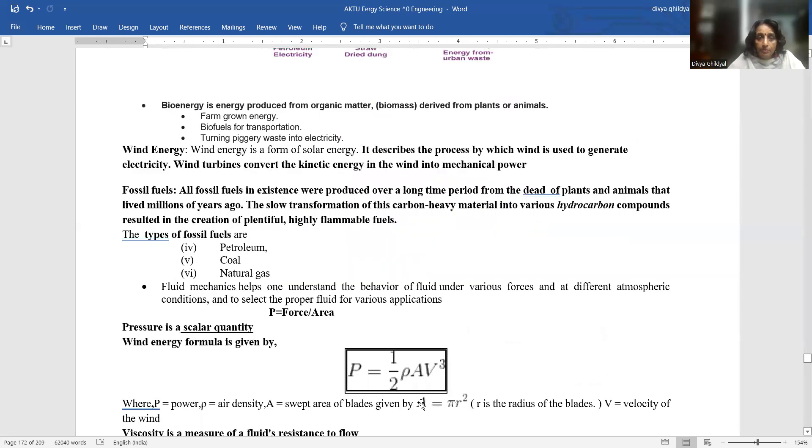Bioenergy is energy that has been produced from organic matter which has been derived from plants or animals. Wind energy is used by wind to generate electricity. Wind turbines convert kinetic energy into mechanical power. However, this mechanical power is converted into electrical power for various uses. Fossil fuels in existence were produced over a long time from dead plant and animals that have lived for millions of years. These fossil fuels which are a combination of large number of hydrocarbon compounds are depleting fast from the earth's surface like petroleum, coal, natural gas.